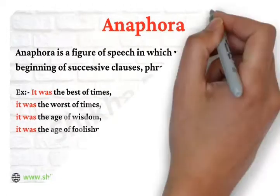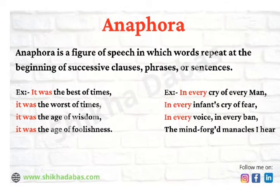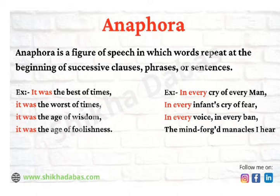The first literary device is anaphora. It is a figure of speech in which a word repeats at the beginning of the sentence. Let's take one example from Charles Dickens' famous novel A Tale of Two Cities. The famous opening line says: 'It was the best of times, it was the worst of times, it was the age of wisdom, it was the age of foolishness.' You see, 'it was' is being repeated at the beginning of every sentence — that is anaphora.